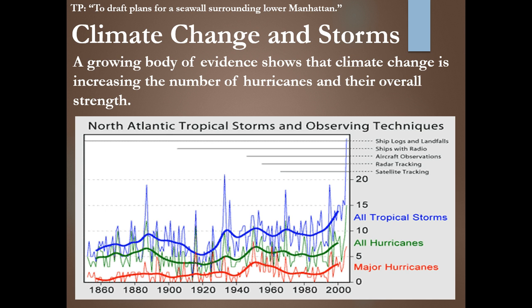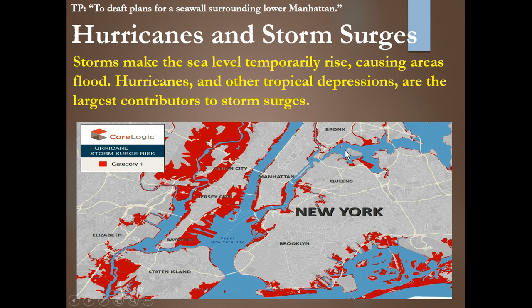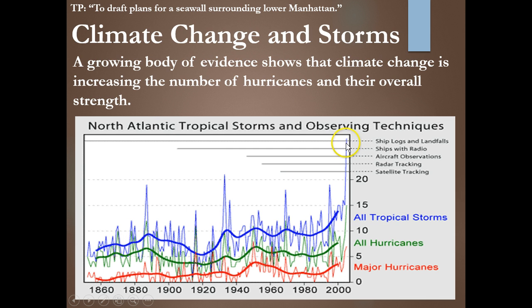So just a really fast review on climate change and storms. We saw this graph. A growing body of evidence shows that climate change is increasing the number of hurricanes and their overall strength. We have all tropical storms here, and if you put a best fit line over this blue trend, you can see it's increasing. Just today I was looking at this again and there is an incredible spike right here that I hadn't noticed before.